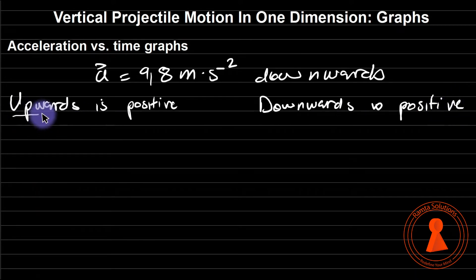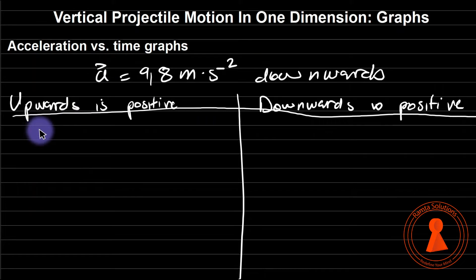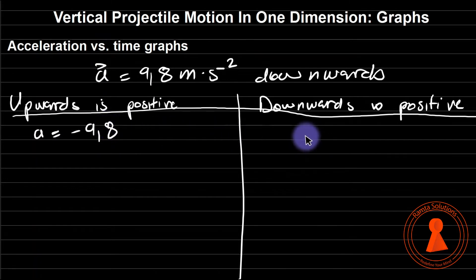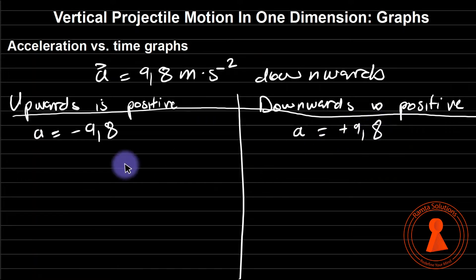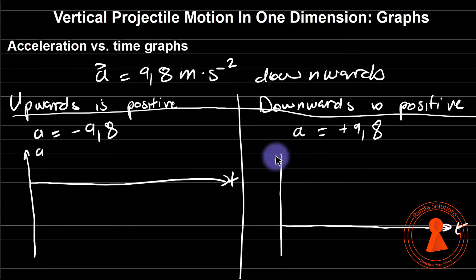When we choose upwards to be positive, acceleration will be negative 9.8. When we choose downwards to be positive, acceleration will be positive 9.8. When we draw acceleration versus time, we will go to negative 9.8. Remember, this is a constant.